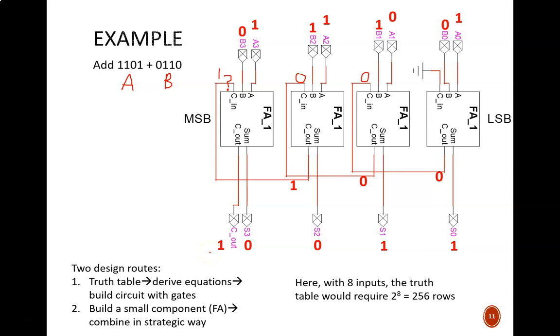We designed this 4-bit adder, but we used a different process than what was taught before, which involved making a truth table, deriving equations, and then building a circuit out of gates. That procedure could have worked here just fine, but it would have been tedious. With eight input bits, the truth table would require 256 rows, and then the equations would be rather lengthy.